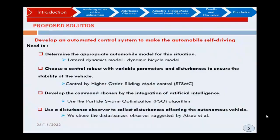Proposed solution. First, develop an automated control system to replace the automobile driver. For that, we need to determine the appropriate automobile model for this situation. In cornering, for example, we need to study the lateral dynamics of the vehicle, so we chose the dynamic bicycle model. Second, choose a control robust with variable parameters and disturbances to ensure the stability of the vehicle. We chose control by sliding mode control. Third, develop the command chosen by the integration of artificial intelligence. We used the particle swarm optimization algorithm. Fourth, using a disturbance observer to collect the disturbances affecting the autonomous vehicle. We chose the disturbance observer suggested by Atsuo et al.